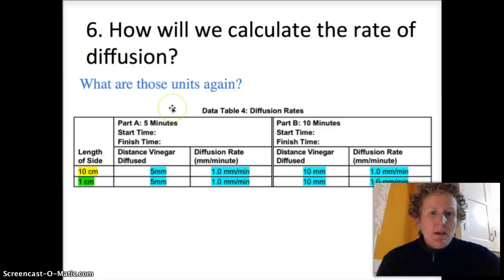For number 6 we want to calculate the rate of diffusion and that's going to go in data table 4. The 10 centimeter cube is 5 millimeters in 5 minutes. So 5 divided by 5 is 1. Same for the 1 centimeter cube. Size doesn't change the rate.